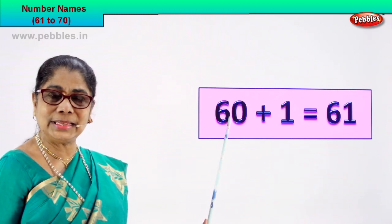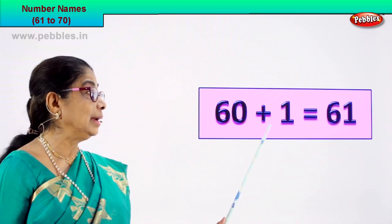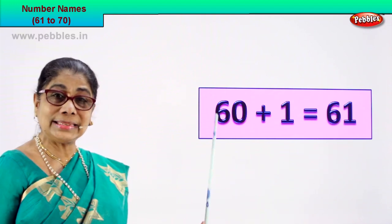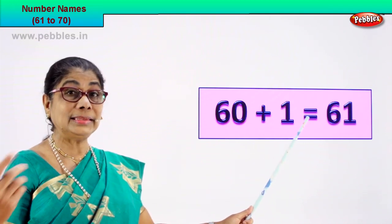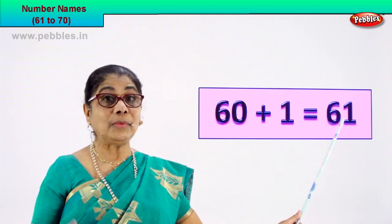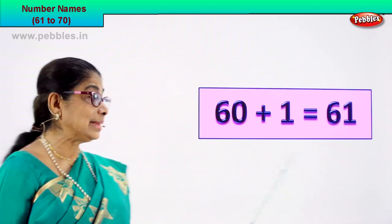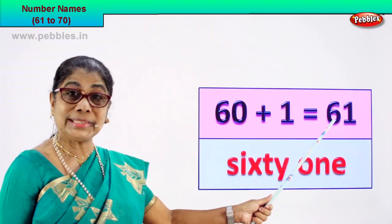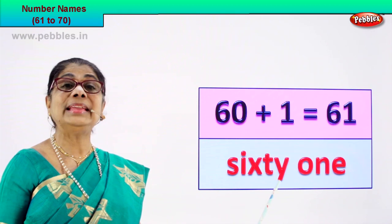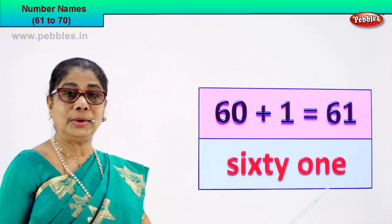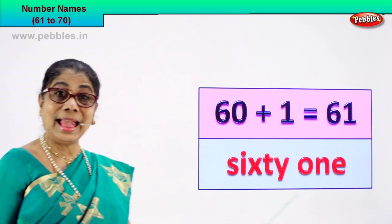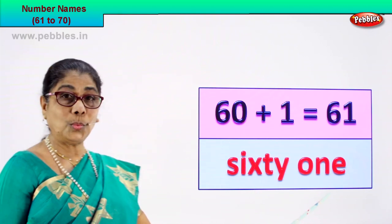Look, 60. Can you see this number? 60 plus 1 is equal to 61. 6 and 1, 61. The numeral 61. Now we must learn to write its name. Spell and write 61. You already know 60 — all you have to do is add 1. How do you spell 60? S-I-X-T-Y. And add O-N-E. 61 is the numeral and you learn to write its name: sixty-one.